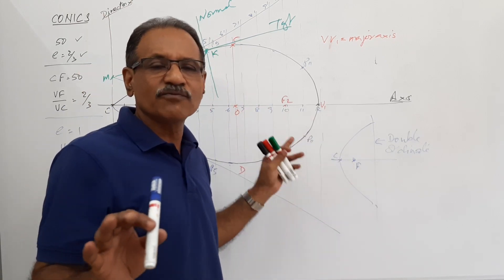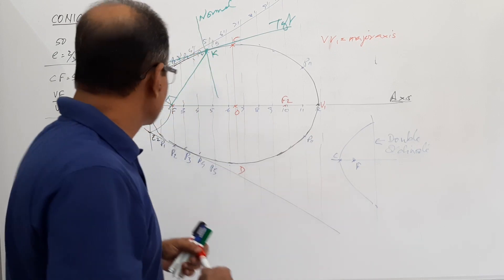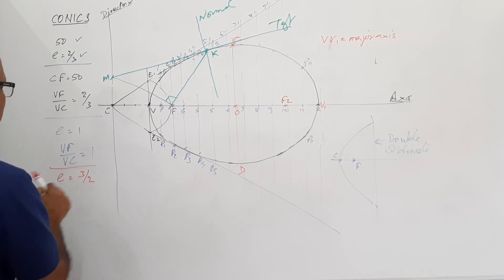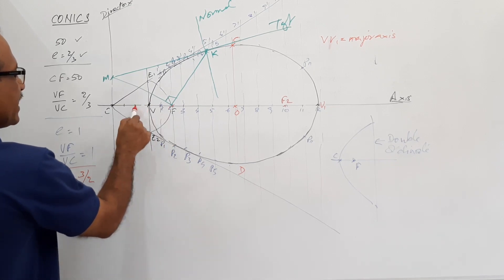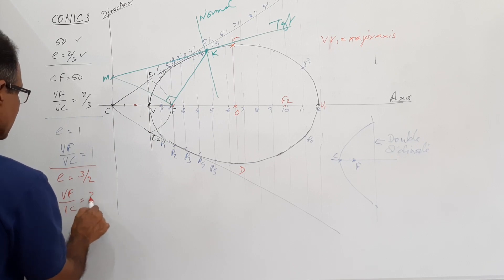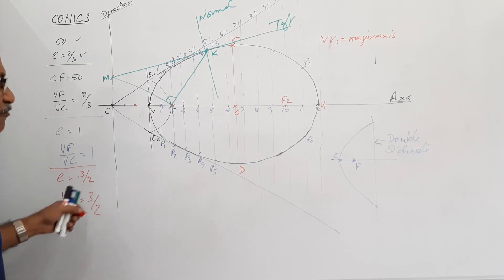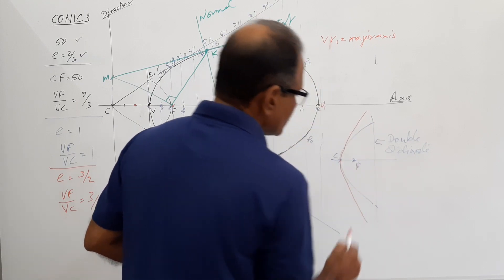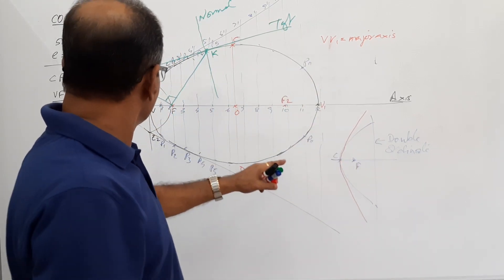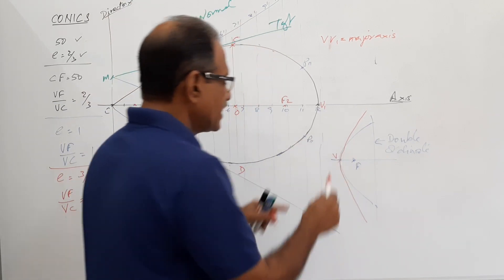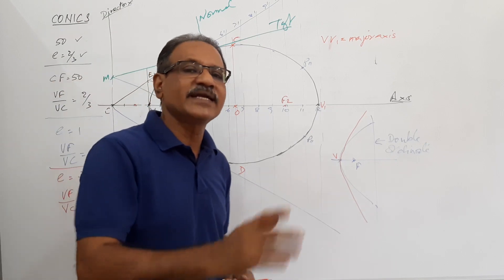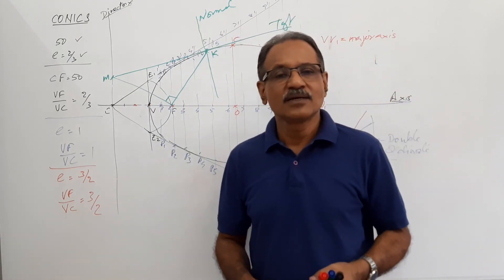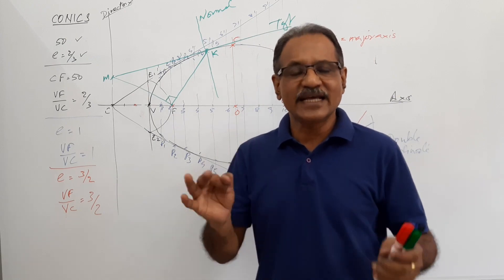The procedure of drawing normal and tangent is identical. In the next case where e equals 3/2, V will be positioned so that VF divided by VC is 3/2. Using the same procedure, take six or eight points and you get a further diverging curve. The procedure of drawing normal and tangent is identical. We have now covered a procedure for drawing a conic when the distance between directrix and focus and eccentricity are given.